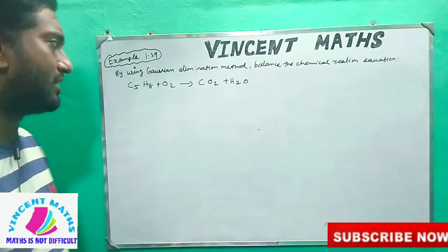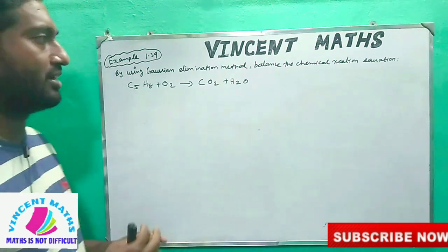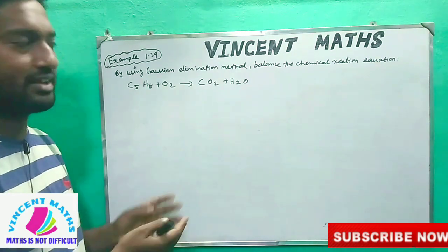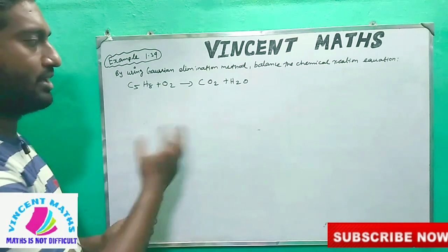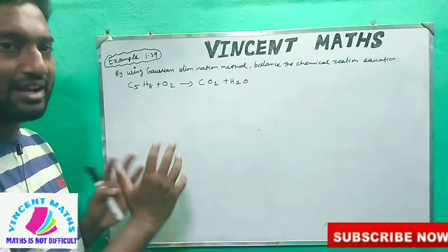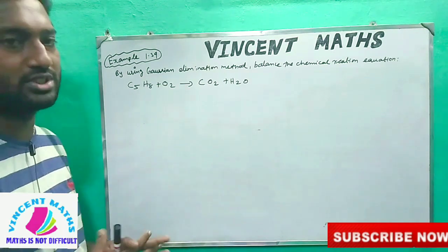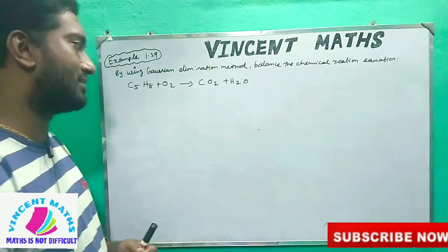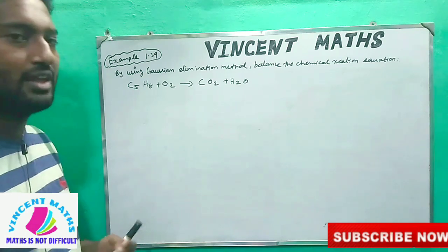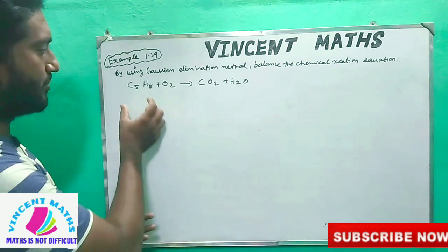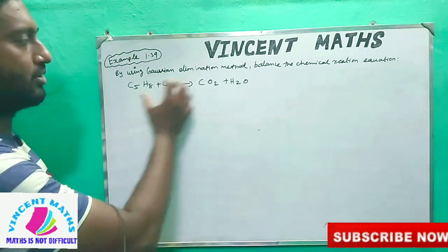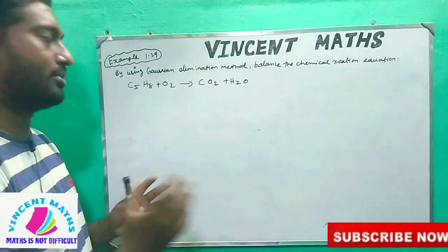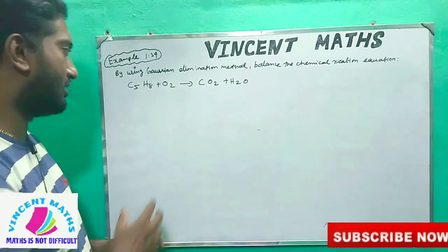Okay friends, we know this is how we are doing this. A chemical reaction is how we equate — that is, it is balanced. How do we do this? We can use chemistry, or the law. That is, how much carbon is there.